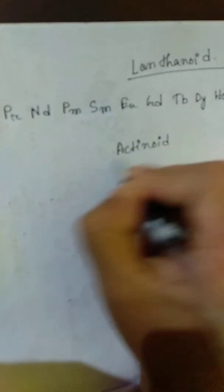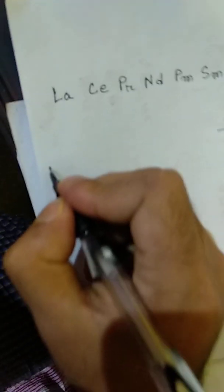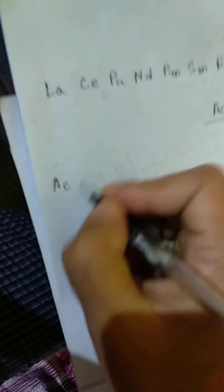Actinoid — the first element of the actinoid series. Its name is actinium, and its symbol is Ac. Next, the following elements in the actinoid series.